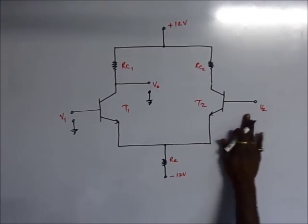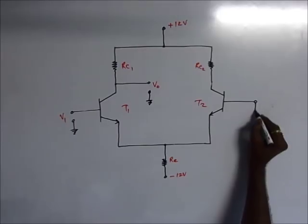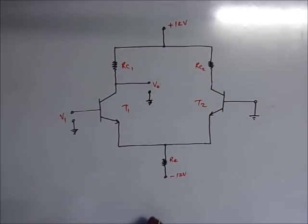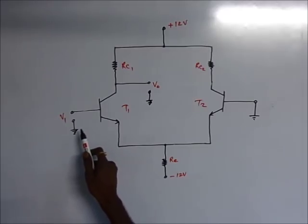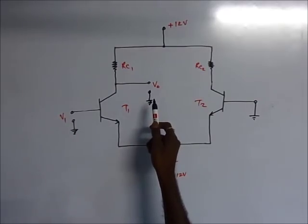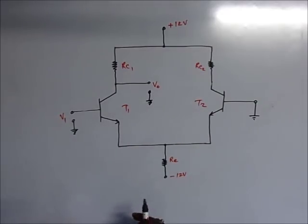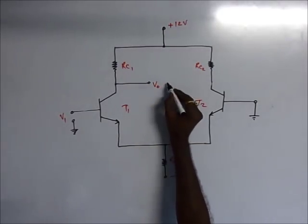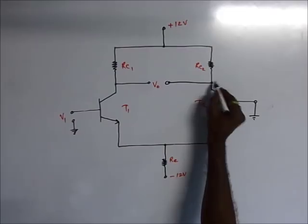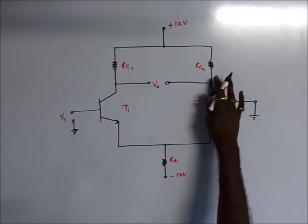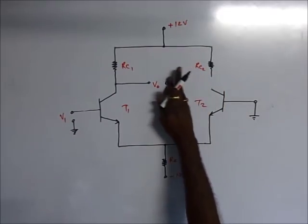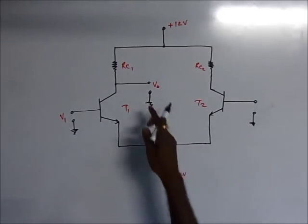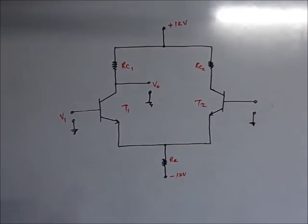If you short-circuit one input terminal and consider only one input terminal with one output, then this circuit is known as single-ended input, single-ended output. And lastly, single-ended input with double-ended output. So in all there are four types of these circuits, out of which we shall consider only the double-ended input and single-ended output configuration.